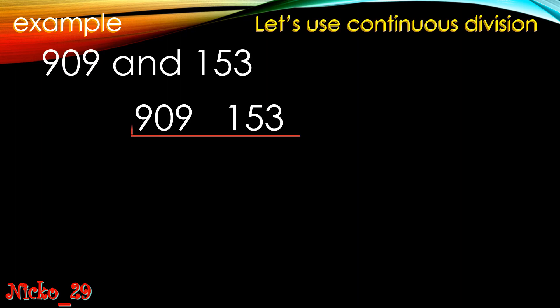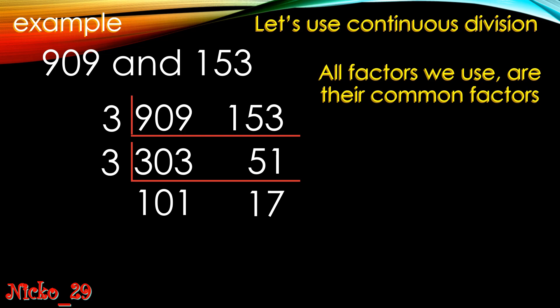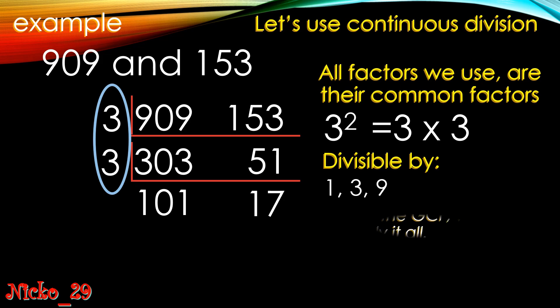Next example: 909 and 153. Using continuous division again — 9+0+9=18 and 1+5+3=9, so both are divisible by 3, giving us 303 and 51. Then 3+0+3=6 and 5+1=6, so both divisible by 3 again, giving us 101 and 17. Both 17 and 101 are prime numbers, so division stops. We used 3 twice, so the common factors are 1, 3, and 9. The GCF is 3 × 3 = 9.